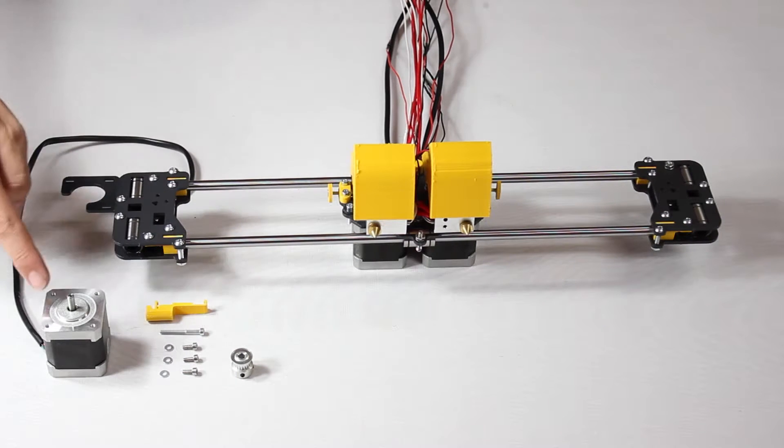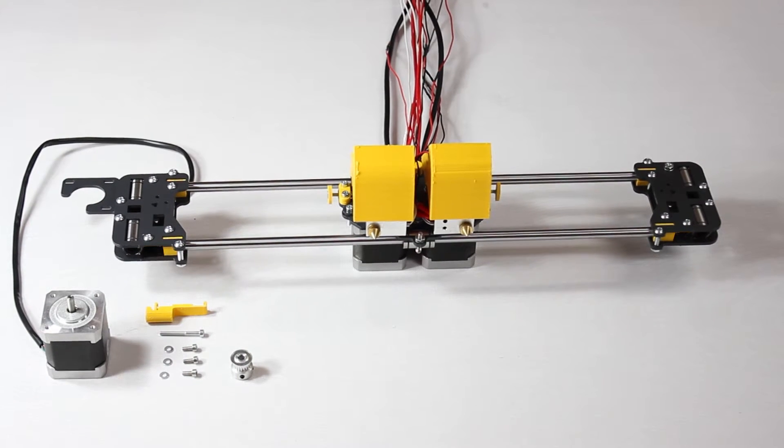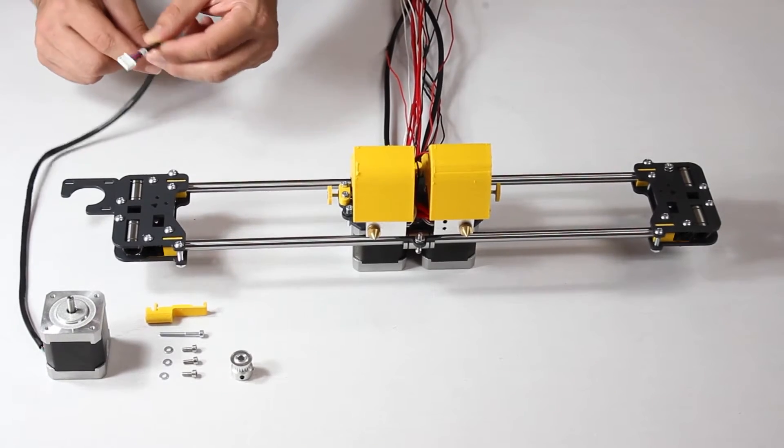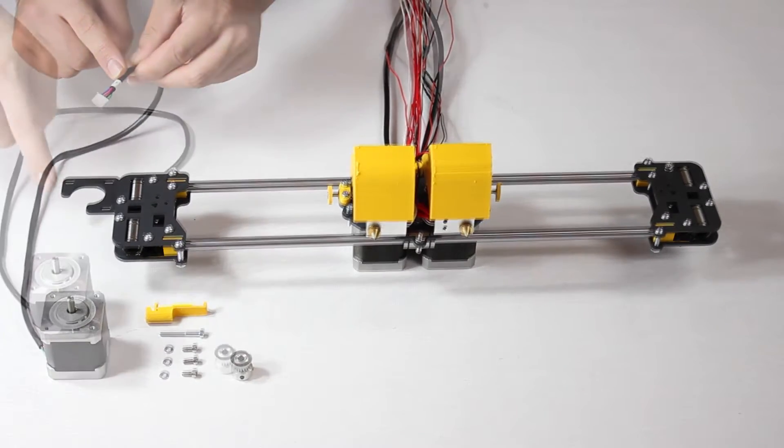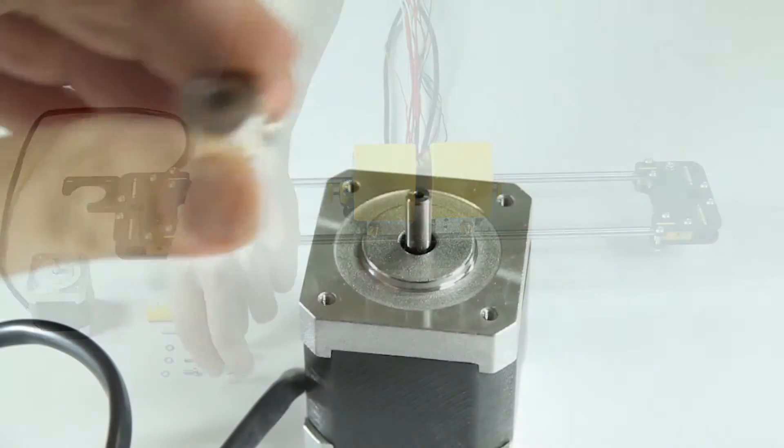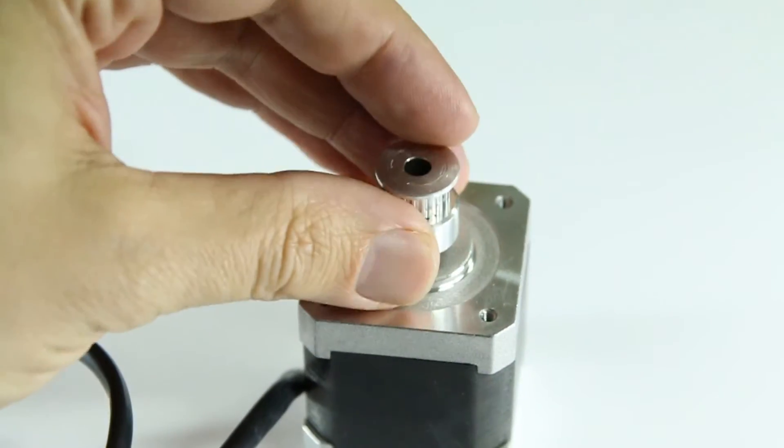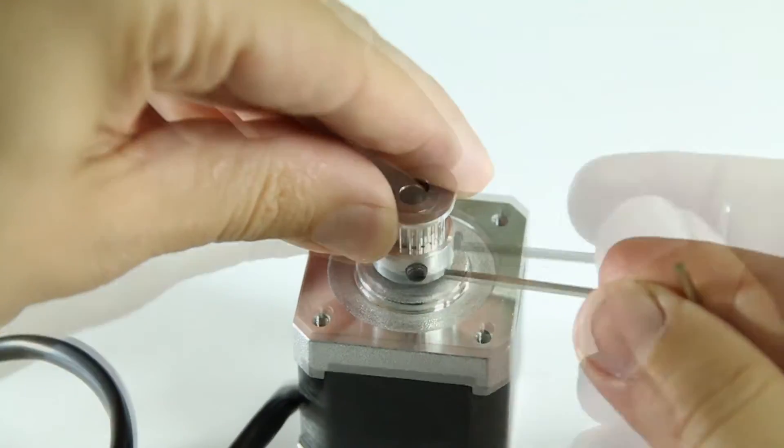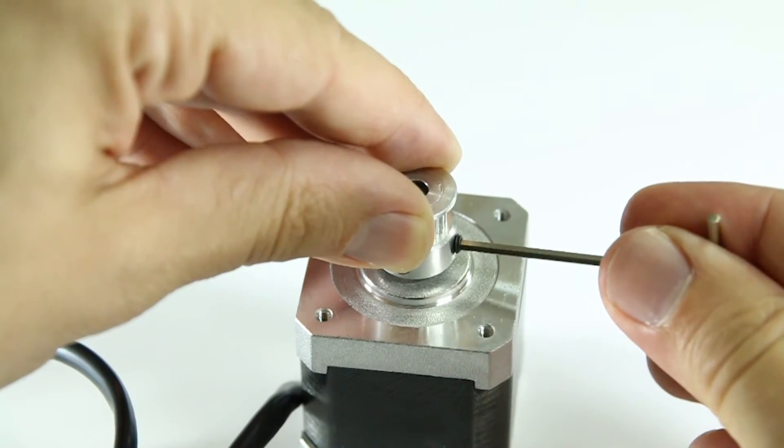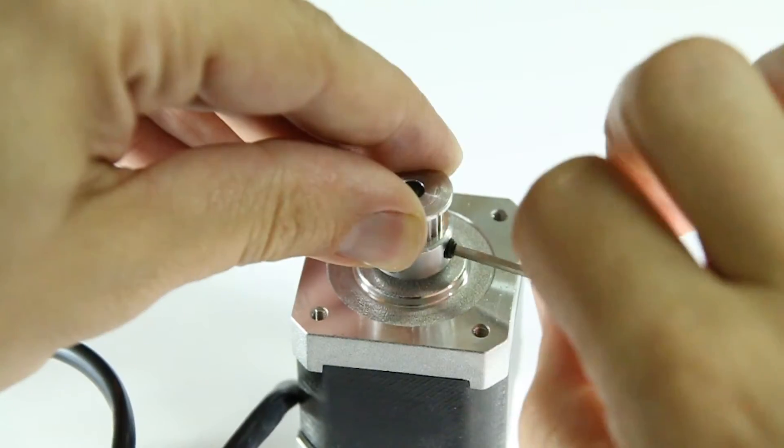On the side you've just assembled you'll be mounting a stepper motor. Make sure you grab the one that has x-axis written on the label. Before going any further you must attach the tooth pulley to the motor shaft. The pulley must have a small clearance from the motor casing. Do up both socket set screws.